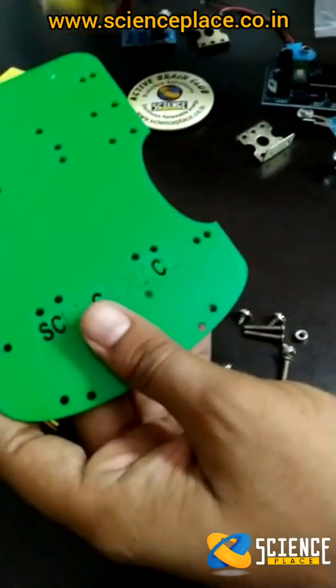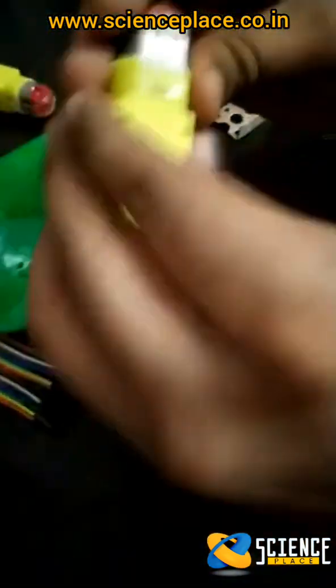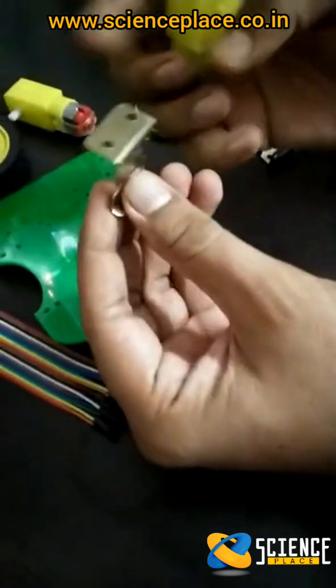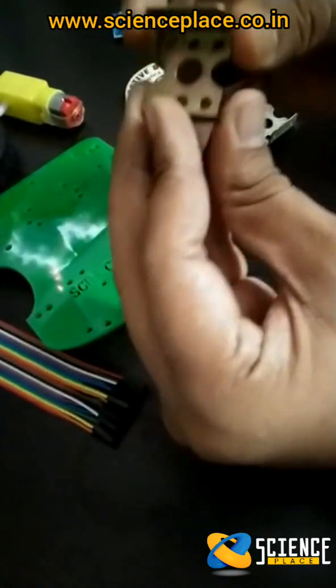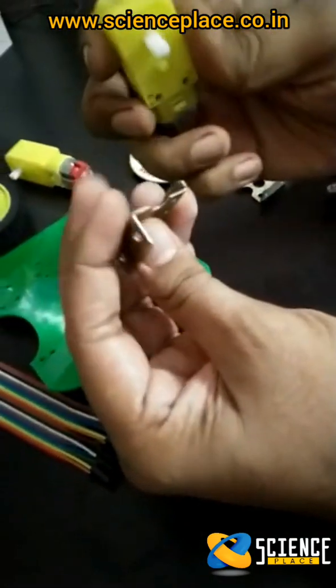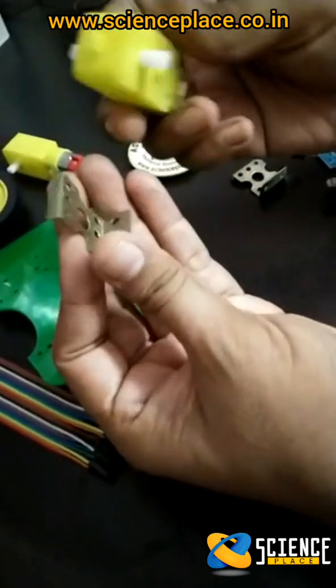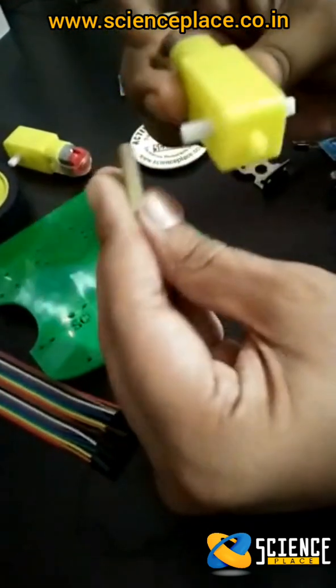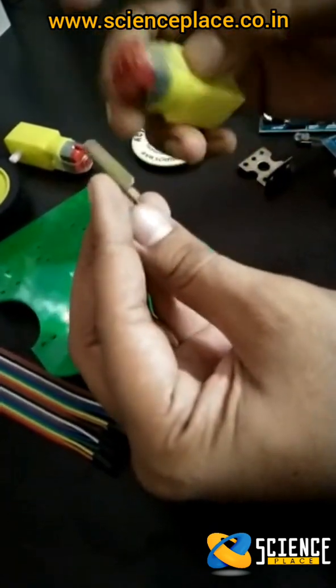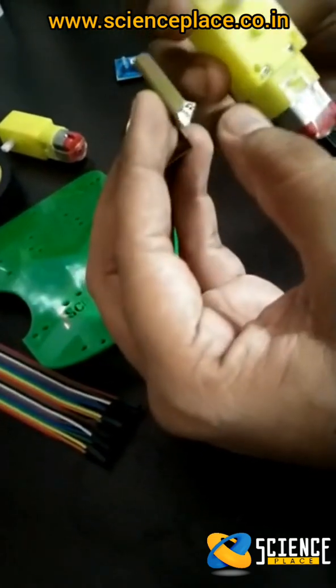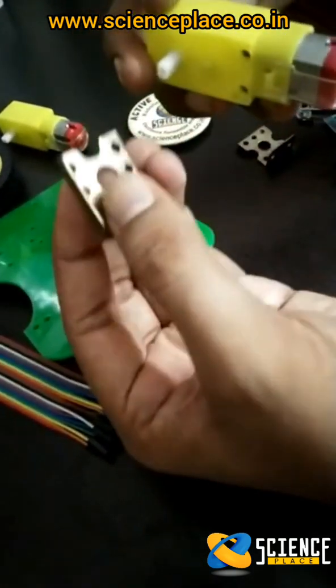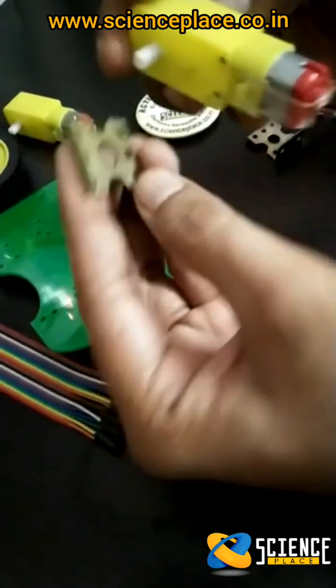Now the next step, I'll take one motor and one clamp. See carefully, this bigger part we have to leave and in this smaller one, you can see like this. We have two holes here and in the middle of this, these two holes will go here like this. We have to fix. The smaller portion of this clamp will come upward here.